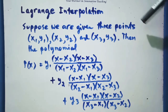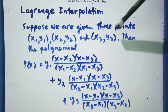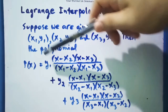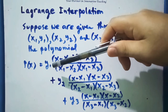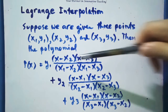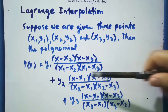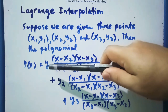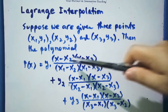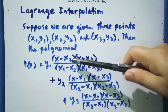Suppose we are given 3 points: x sub 1, y sub 1; x sub 2, y sub 2; and x sub 3, y sub 3. Then the polynomial P of x is equivalent to y sub 1 times x minus x sub 2, times x minus x sub 3, all over x sub 1 minus x sub 2 times x sub 1 minus x sub 3. So this is the pattern: if this is y sub 1, it will be multiplied by x minus x sub 2 and x minus x sub 3.